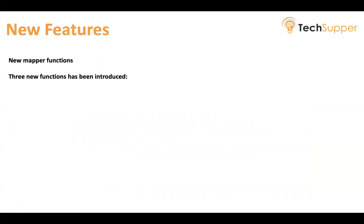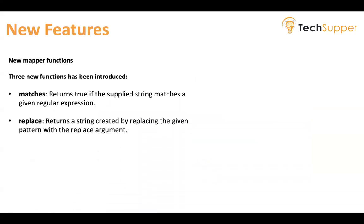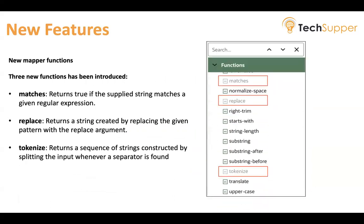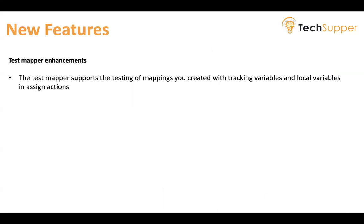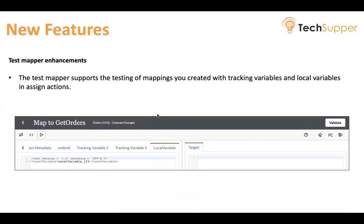Three new mapper functions have been introduced. The first is Match, the second is Replace — one of the long-awaited functions that lets you replace characters — and the third is Tokenize, which returns a sequence of strings constructed by splitting the input whenever a separator is found. The test mapper has also been enhanced. It supports testing of the mappings you created. In Gen 2, if you had created tracking variables or local variables, you could not populate dummy values. Now in Gen 3 you can assign dummy values to tracking and local variables and then test.